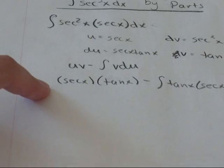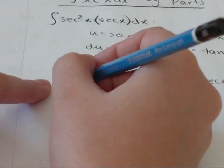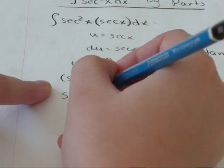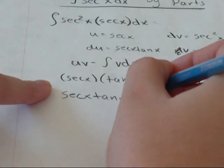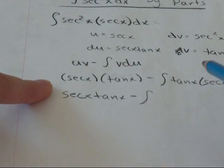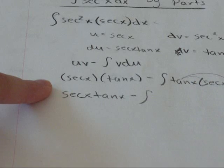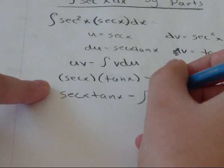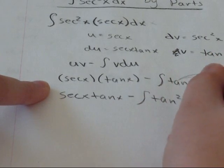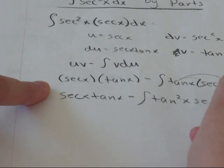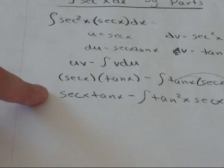I'm going to rewrite this as just secant tan. So secant x tan x minus the integral. I'm going to distribute the tan x into both of these terms. So tan squared x secant x dx.